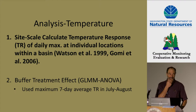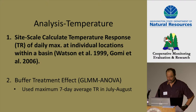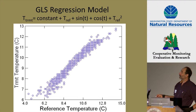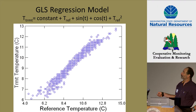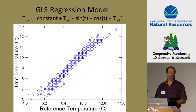For temperature, it gets a little more complicated. First we had to calculate the temperature metric accurately. What we did was calculate a site-scale daily temperature response following methods from Watson et al. and Gomi et al. We used the pre-harvest data — up to two years — and fed that into a generalized least squares regression model, looking at maximum daily temperature in the treatment as a function of temperature in the reference basin, with seasonal terms to capture natural seasonal variability, and an autoregressive moving average term to reduce autocorrelation in these daily time series data.